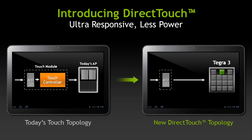In a nutshell, what DirectTouch does is improve touch performance and reduce power. The way we do that is by offloading some of the touch processing from the dedicated touch components on a typical tablet onto Tegra 3.